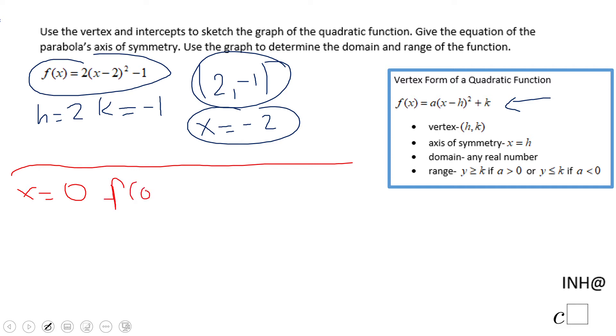So f of 0 in this case is going to be 2 times 0 minus 2 squared minus 1. That will be 2 times negative 2 squared minus 1. That will be 2 times 4 minus 1, and that will be 8 minus 1, which is 7. So 0 and 7 is the y intercept.